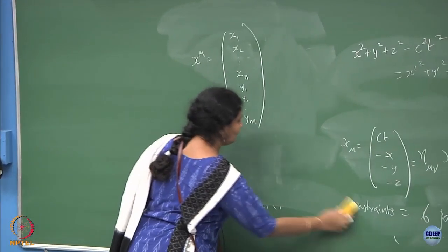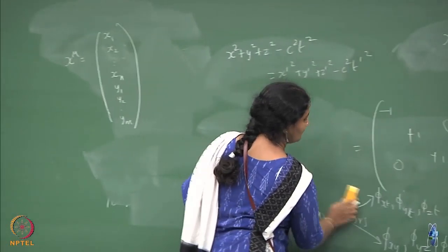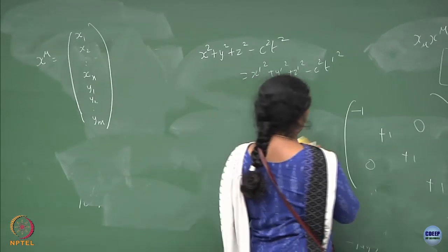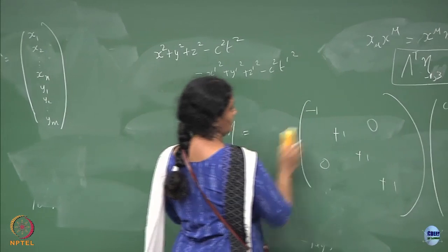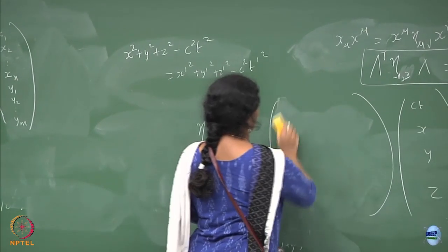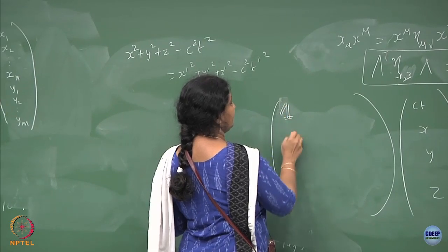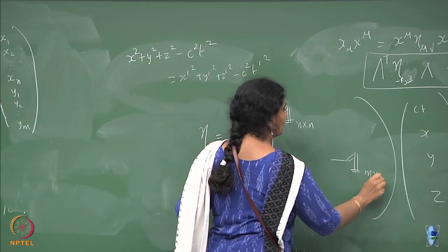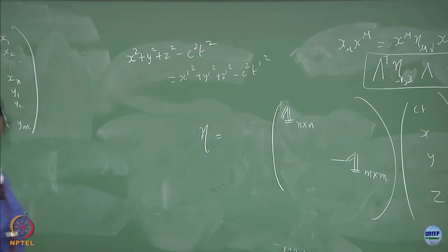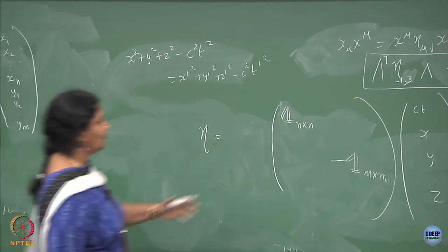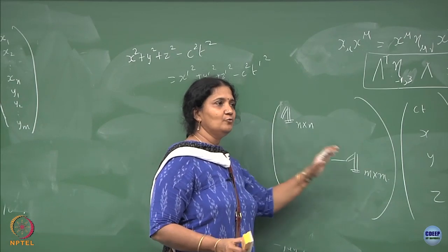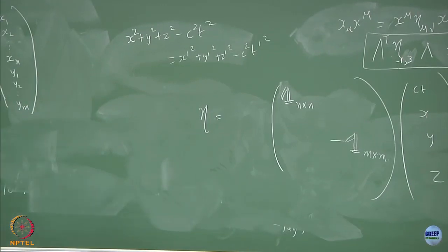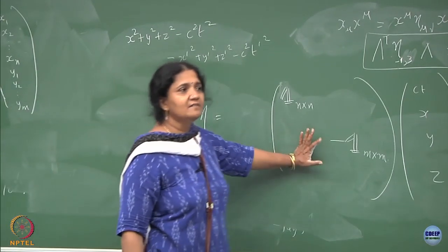What I am going to do is write an eta matrix — an eta matrix with identity plus identity transpose as n×n, minus identity as m×m. Earlier I had put this as minus and this as plus, but you can do it either way. I will take such a matrix as eta.